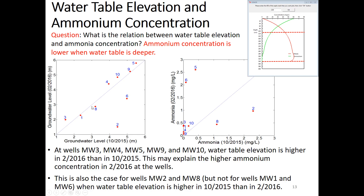For well two and well eight, when the water table elevation is higher in 2015, the ammonium concentration is also higher in 2015. This confirms that ammonium concentration is lower when the water table is deeper — supporting our understanding that water table elevation is a controlling factor for ammonia concentration.